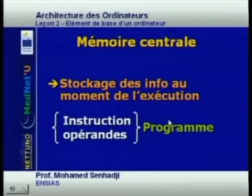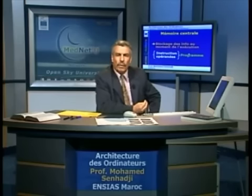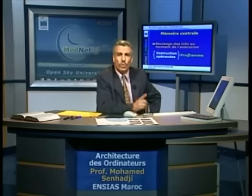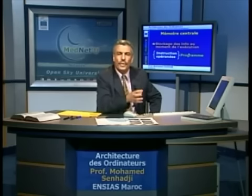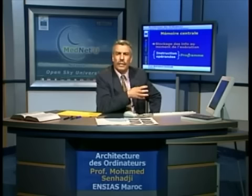The first element is the central memory, which is responsible for the storage of information at the moment of the execution of the program. These information are of two types: instructions and données (data) or operands. These instructions and data constitute what we call a program. The central memory is the element responsible for the processing of information during the execution of a program. When we want to execute a program, it is loaded into the central memory, and it is there where we execute it.